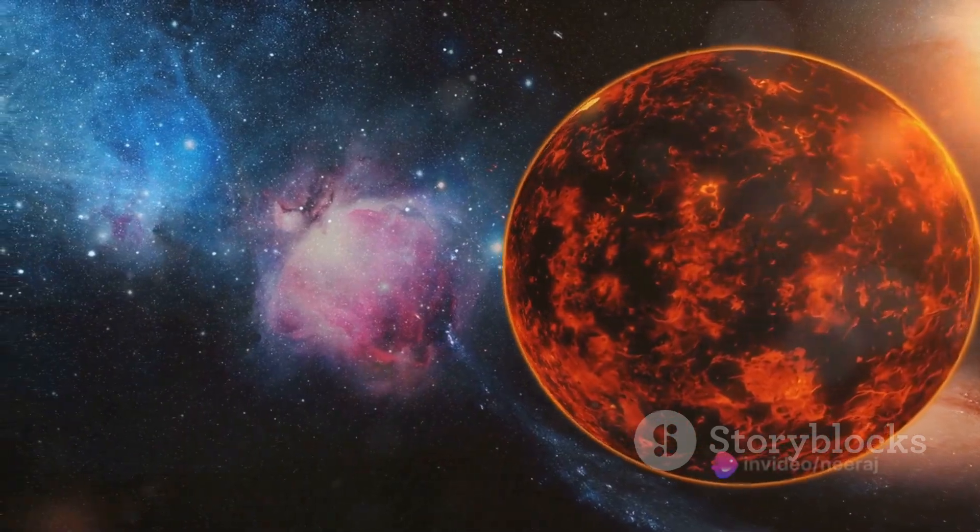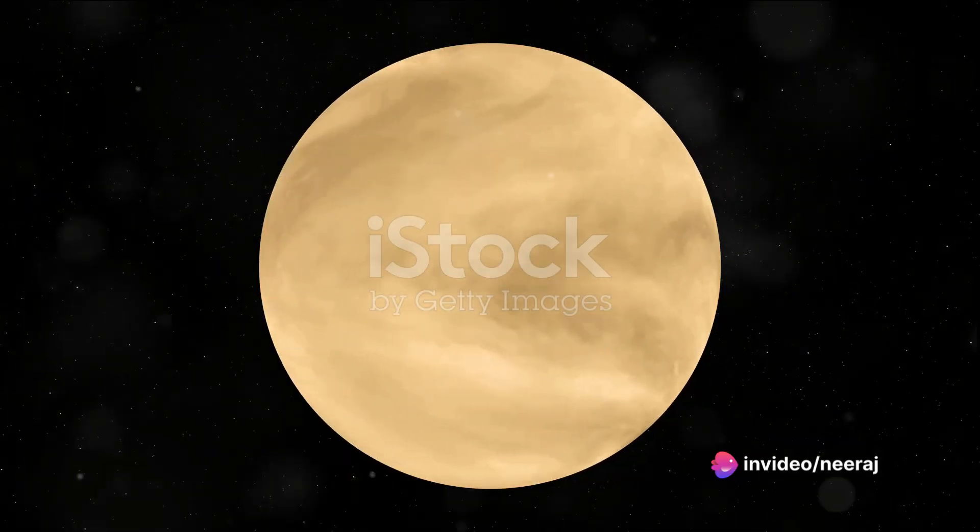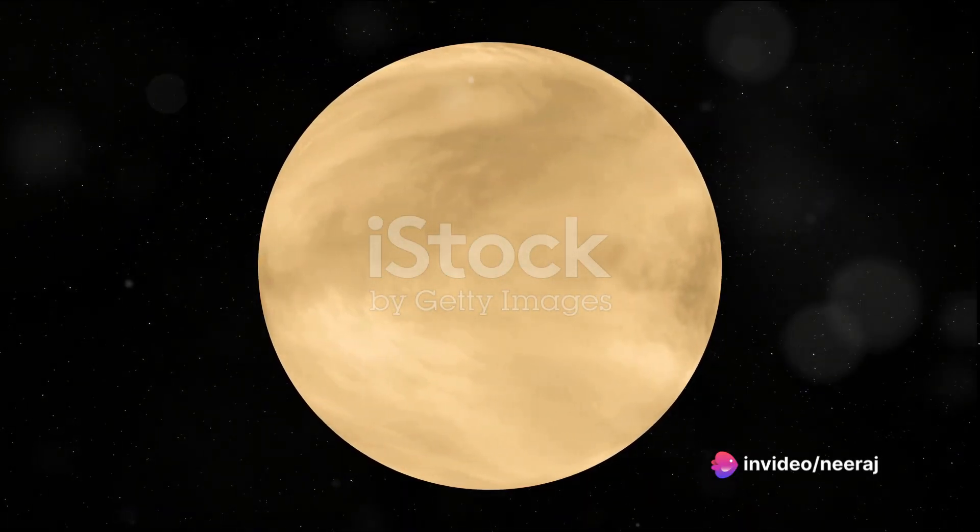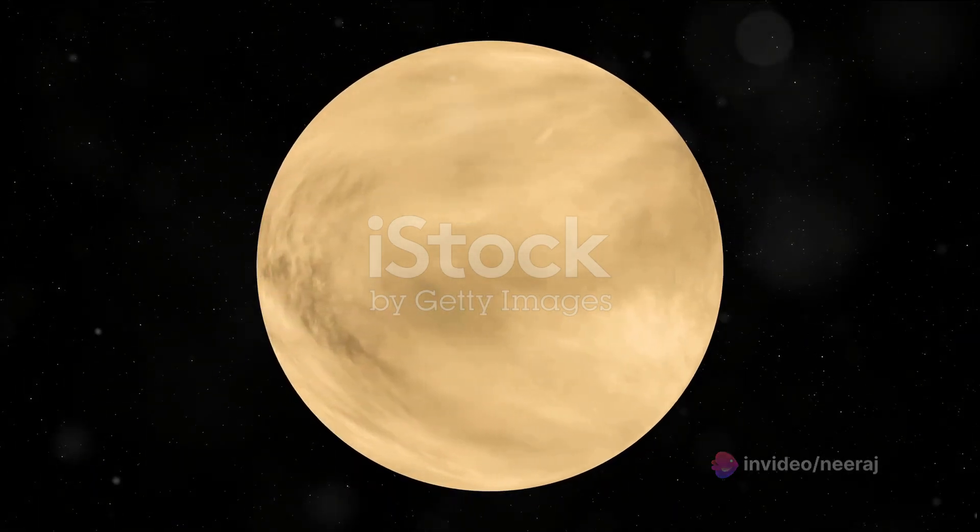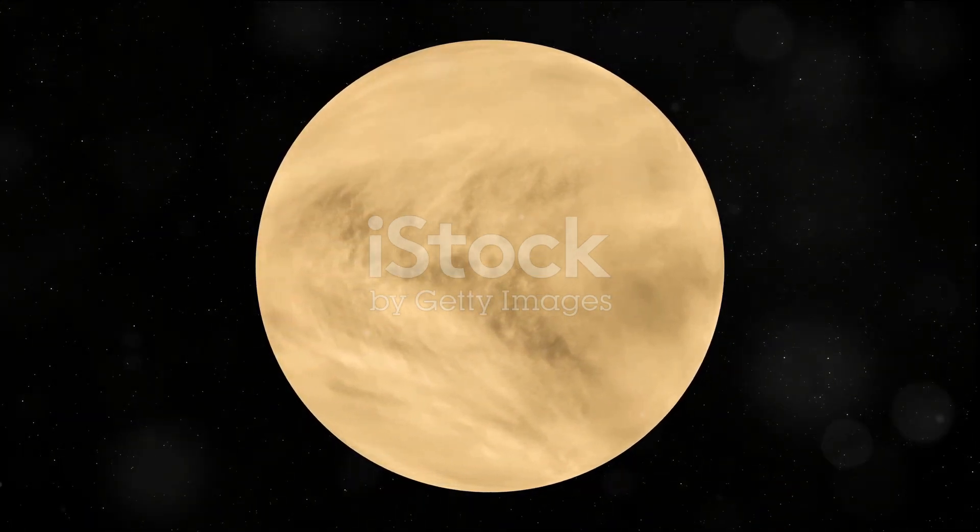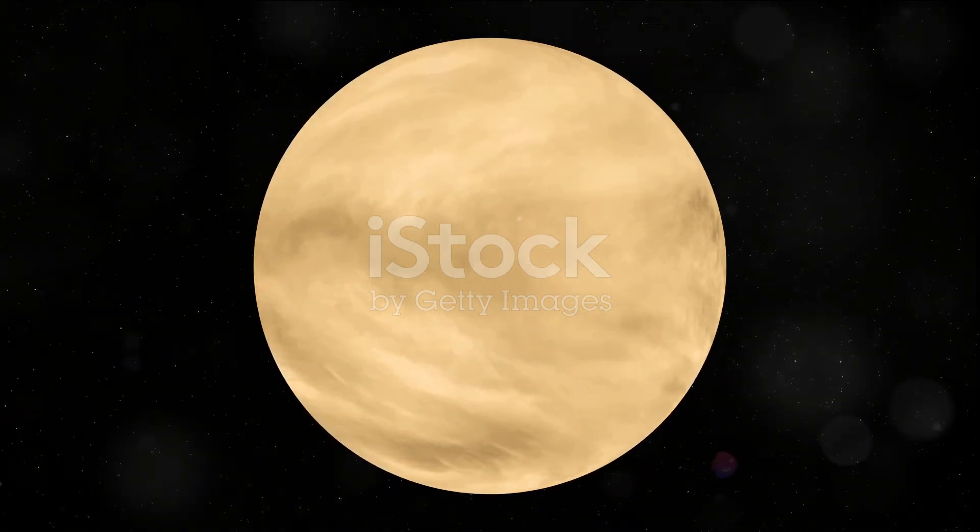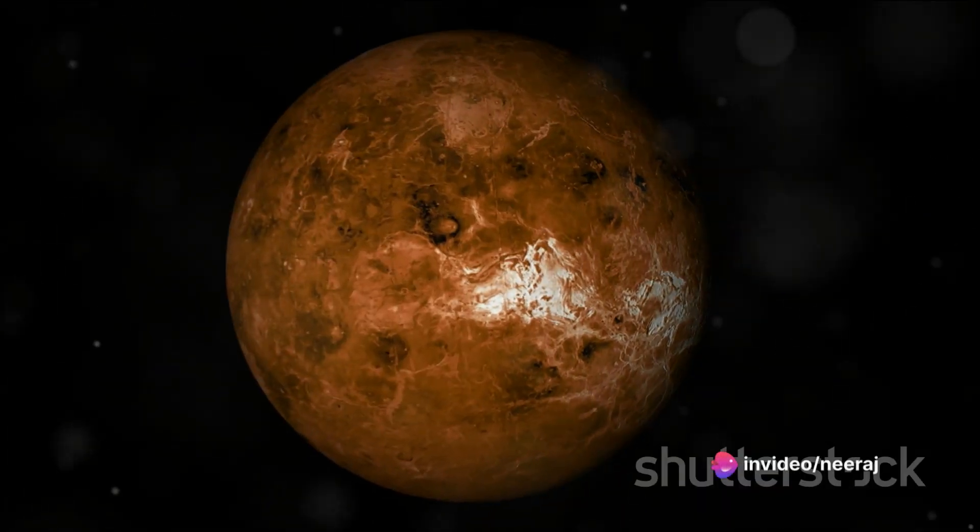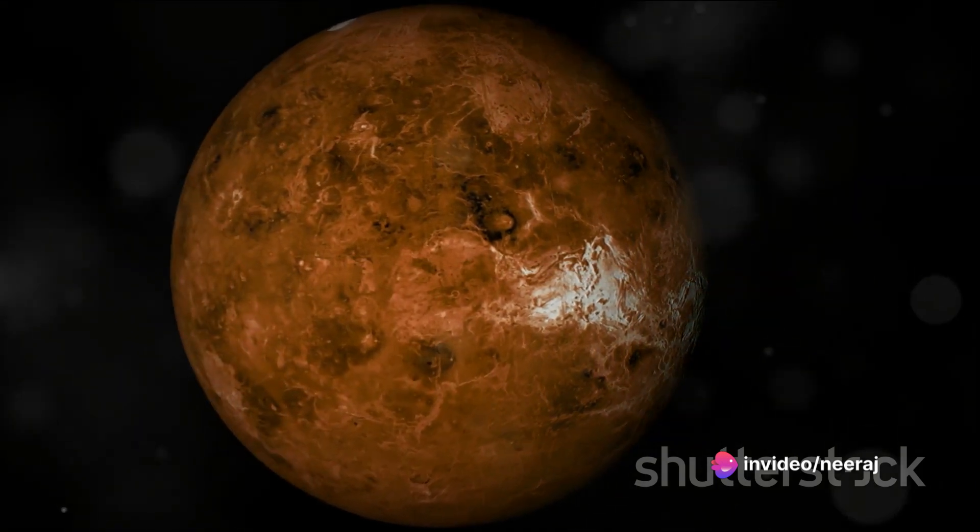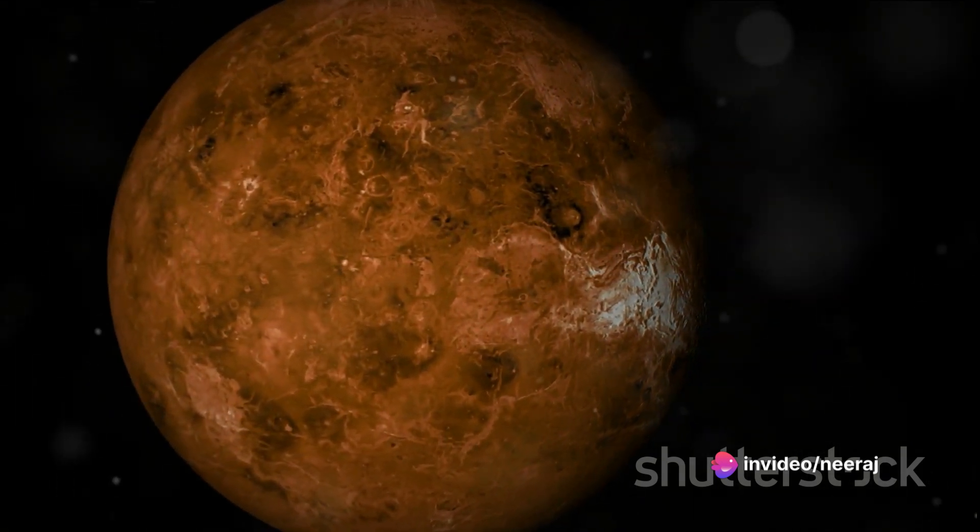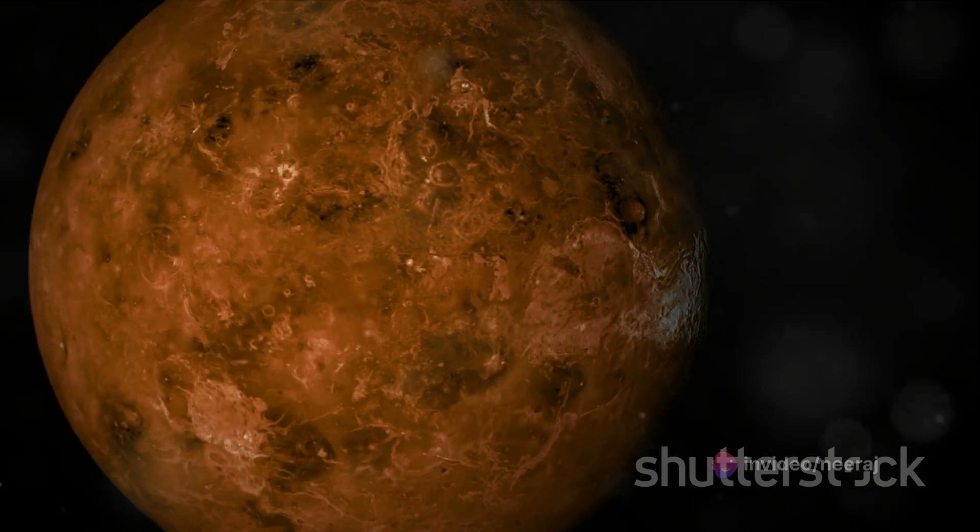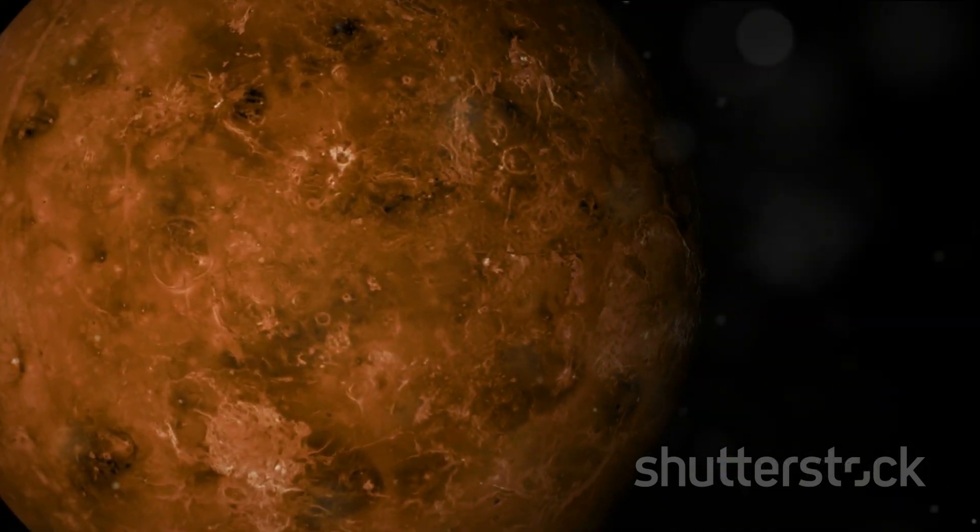Venus is shrouded in a thick, toxic atmosphere primarily composed of carbon dioxide, with clouds that rain sulfuric acid. Yes, you heard right, sulfuric acid. The surface of Venus is a hellish landscape, with temperatures hot enough to melt lead, reaching up to 900 degrees Fahrenheit. That's hotter than the surface of Mercury, the planet closest to the Sun. This makes Venus the hottest planet in our solar system.